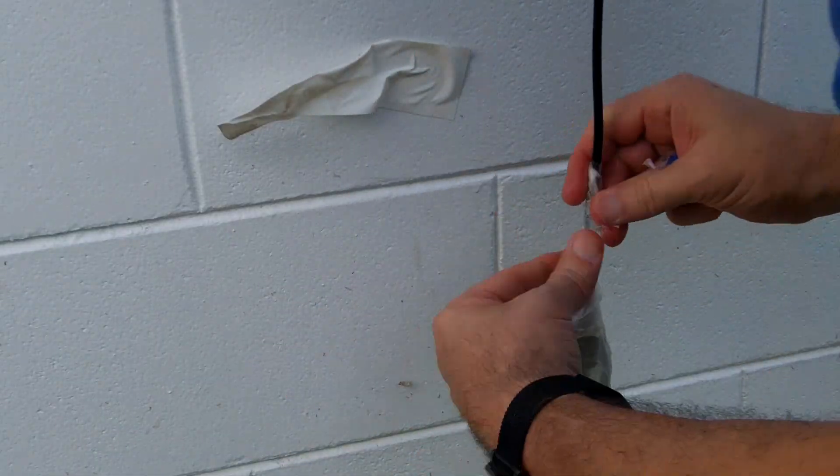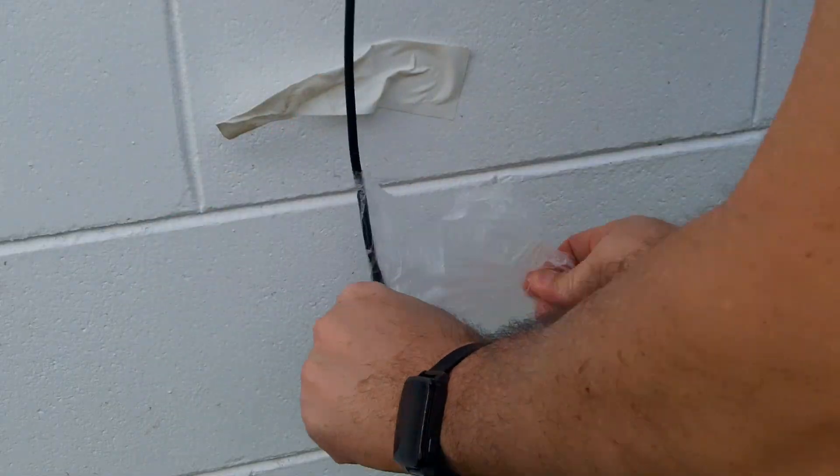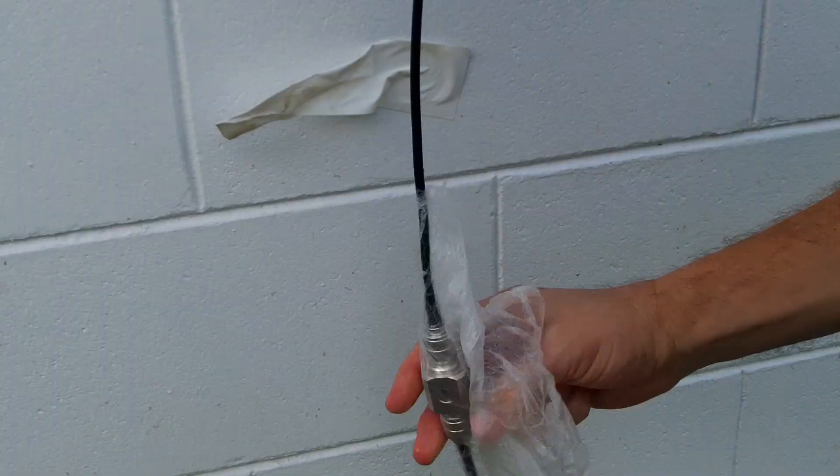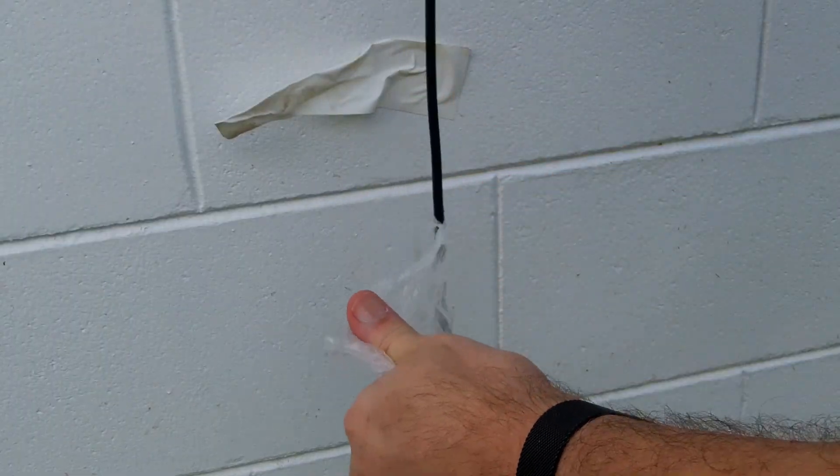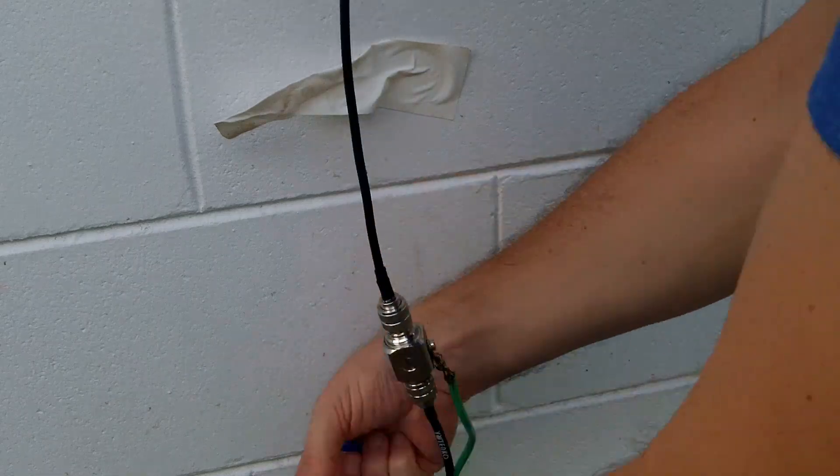So you've got to keep water out of the connections. Putting saran wrap around it with some tape on top works okay for a day or two while your real silicone tape is arriving in the mail, but it's not a permanent long-term solution.